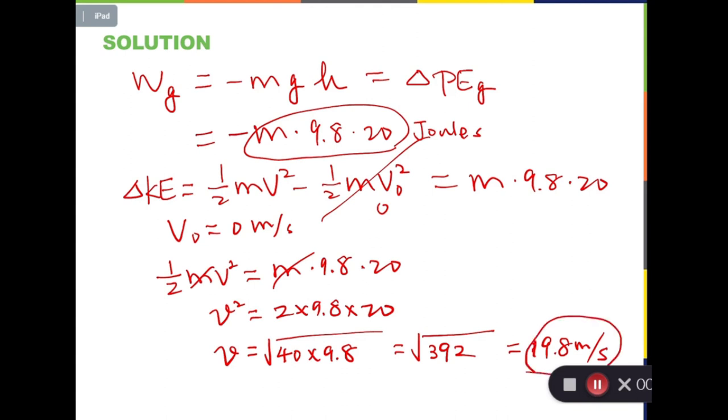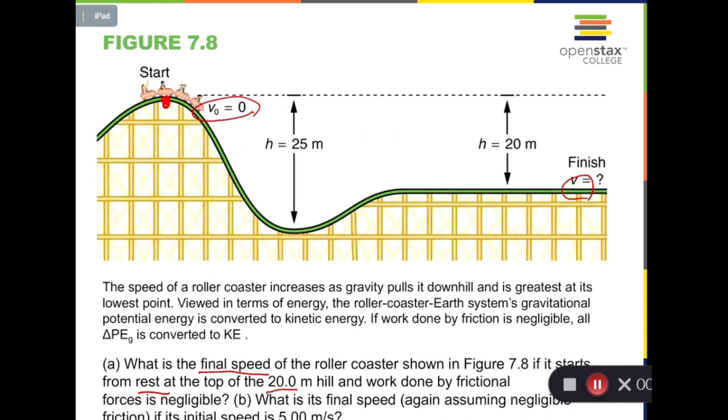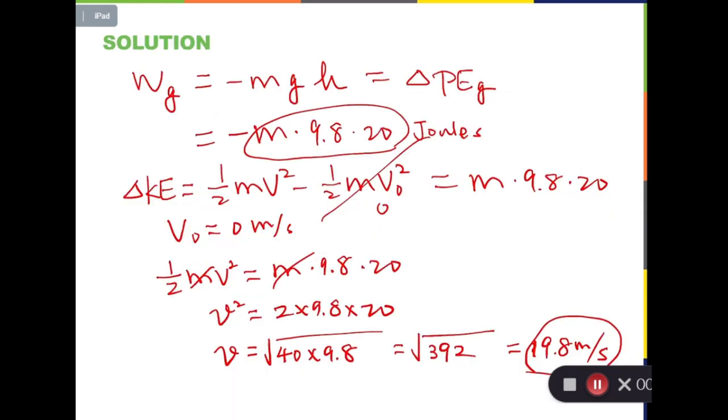For part B, the only difference is v_0 is not 0 anymore, which is 5 instead. But we can use the same idea to find v.